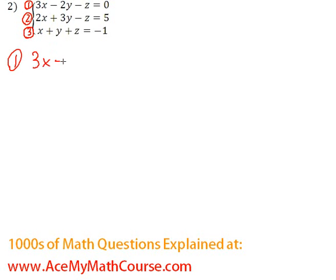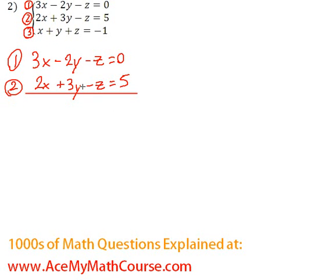So equation 1, 3x minus 2y minus z equals 0. Equation number 2, 2x plus 3y minus z equals 5. Okay, so as I have mentioned, if we subtract these equations, the z's are going to go. So 3x minus 2x is just x, negative 2y minus 3y, negative 5y. And negative z minus z is 0. And 0 minus 5, negative 5. Great. So I'm going to call this equation equation number 4.